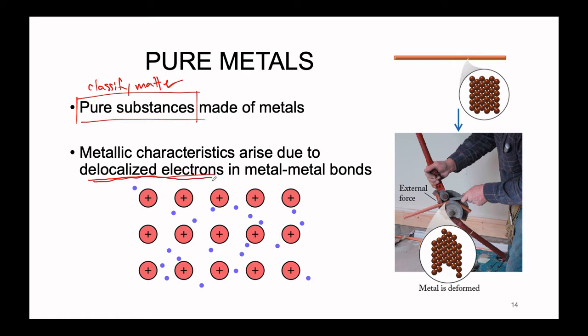The bonding that occurs between metal atoms is not an ionic bond. It is not a covalent bond. It is something totally different. In an ionic bond, electrons are completely transferred from one atom to the next, giving us our charged particles. In covalent bonds, electrons are discreetly shared between two different atoms, giving us a covalent bond.